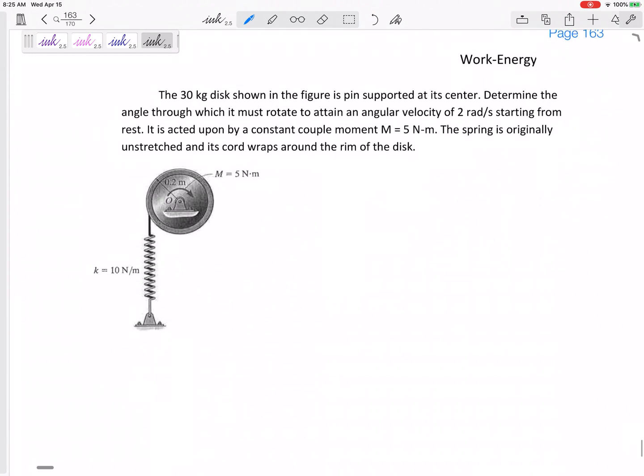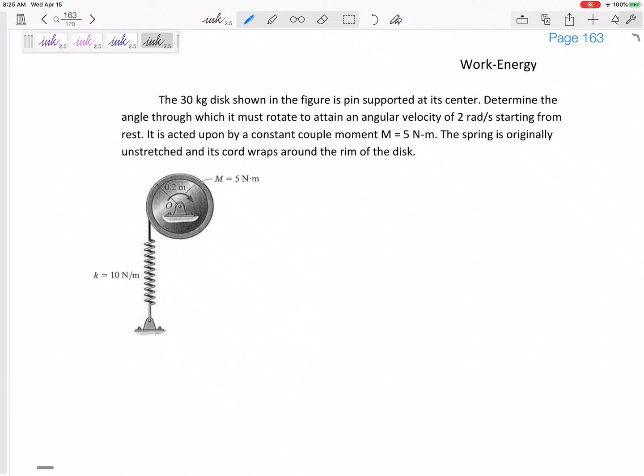All right, so we skip one problem. Let's look at this problem right here. We've got a 30 kilogram disc. It's pin supported at its center. Determine the angle through which it must rotate to attain an angular velocity of two radians per second starting from rest. It's acted on by a constant couple moment. The spring is originally unstretched and its cord wraps around the rim of the disc.